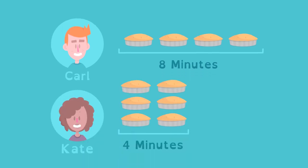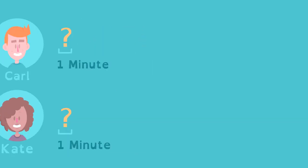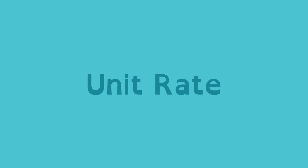Kate can eat six pies in four minutes. Sounds like Kate will win, but here's a question: how many pies can each of them eat per minute? Unit rate can help us figure this out.